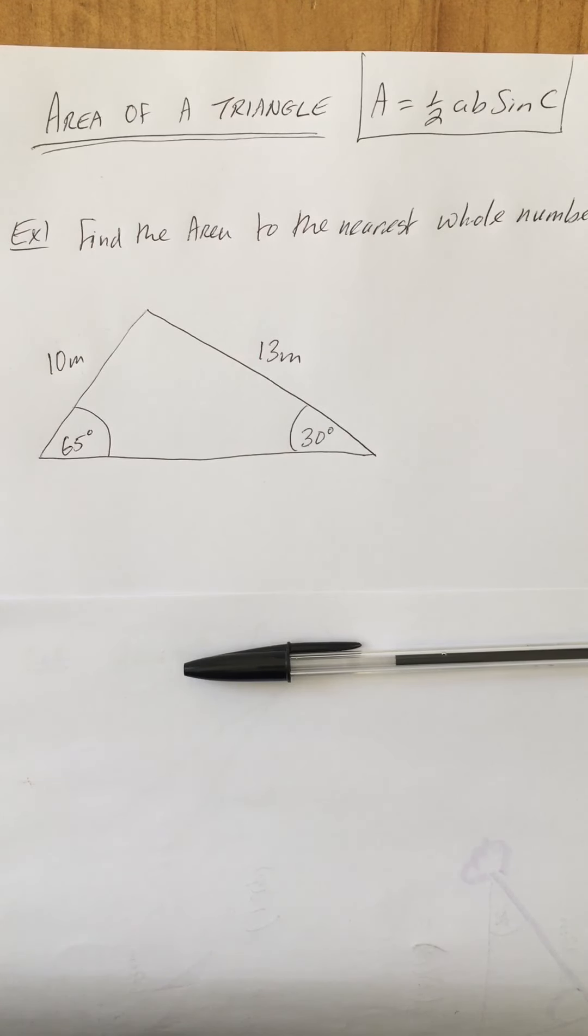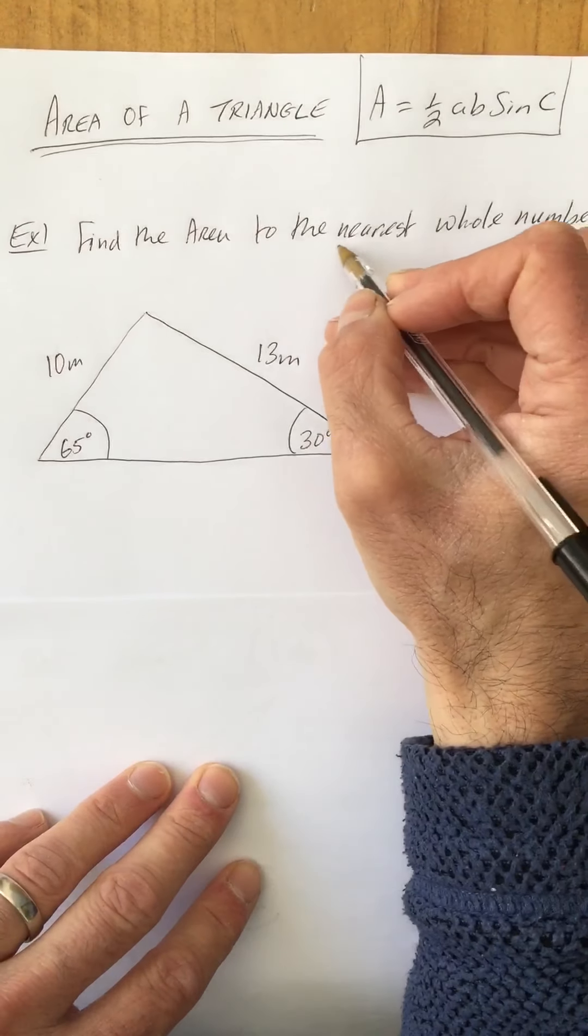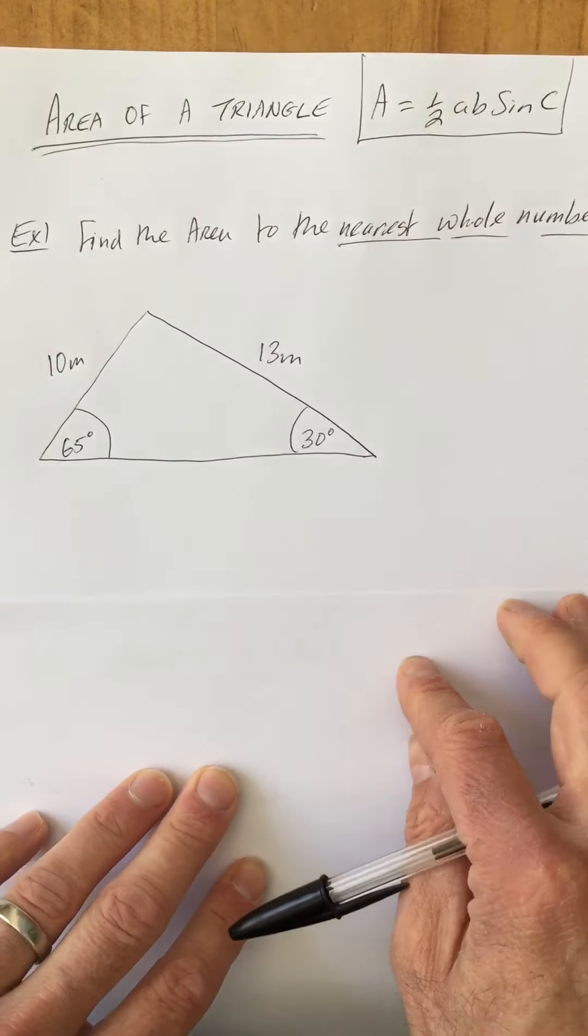The area of a triangle in trigonometry: remember the area is half ab sin C. Example one: find the area to the nearest whole number.